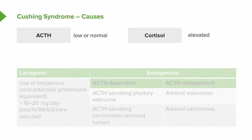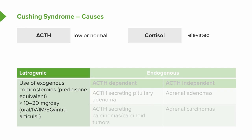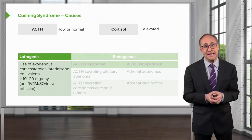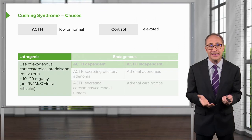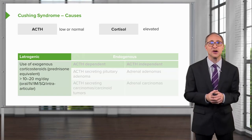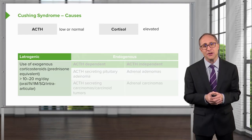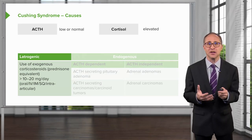Cushing syndrome may present with low or normal ACTH with an elevated cortisol. Causes may be iatrogenic in cases of exogenous steroid use. This usually is where a prednisone equivalent of greater than 10 to 20 milligrams per day is used. These can be administered orally, intravenously, intramuscularly, subcutaneously, or intraarticularly, and may even be in the form of creams used in the treatment of chronic dermatological conditions.